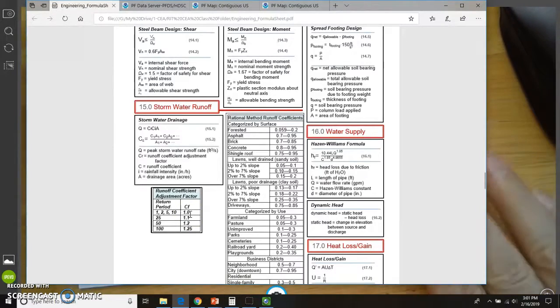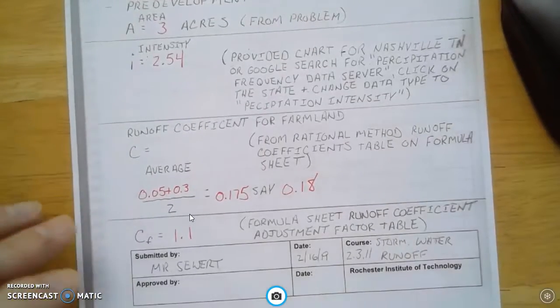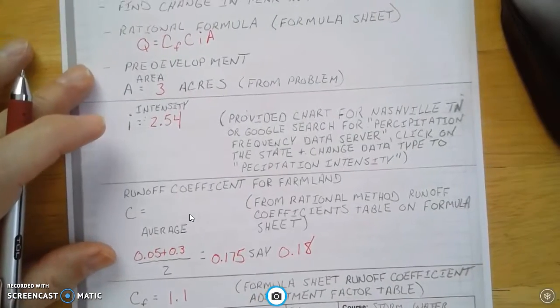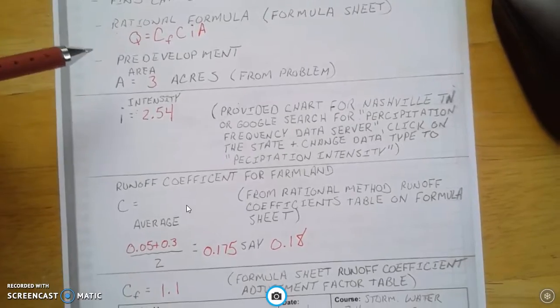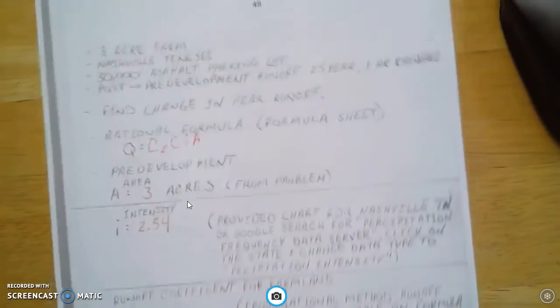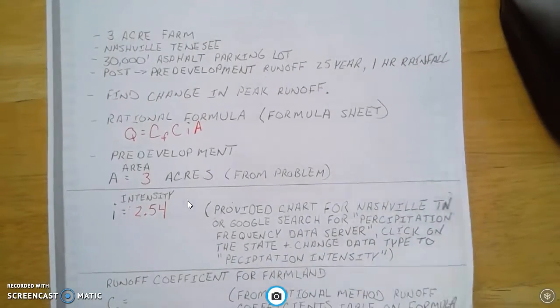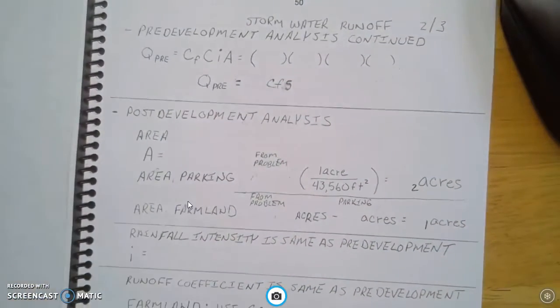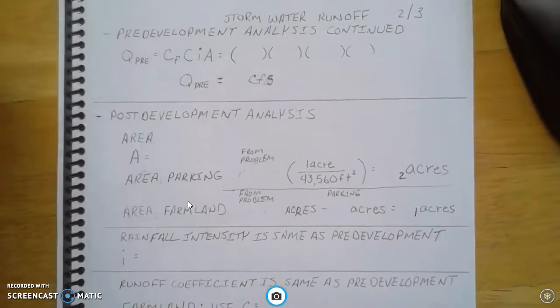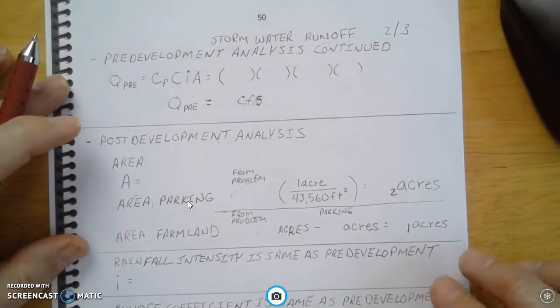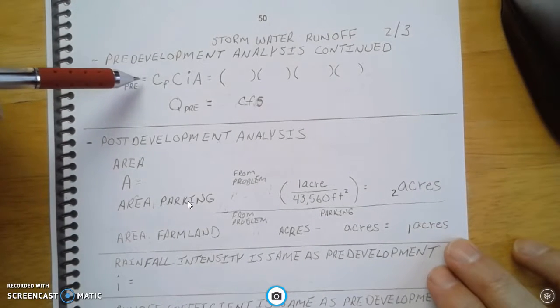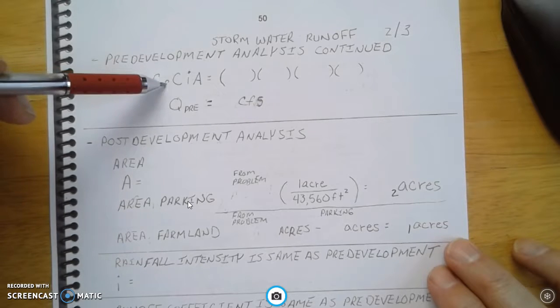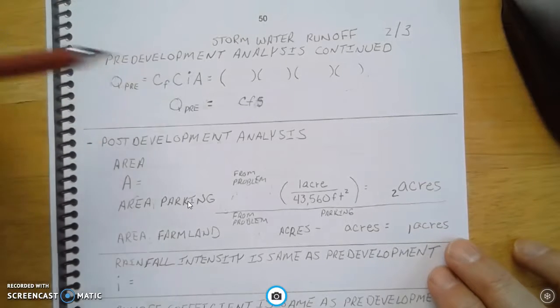So we've got everything filled out on this page right now. We've got all the parts of the formula that we need to solve this pre-development part of the formula. I'm going to just put this off to the side. Now I'm going to start plugging in values. Here's the formula. Runoff pre is CF times C times I times A. The first one is CF, so that is 1.1.